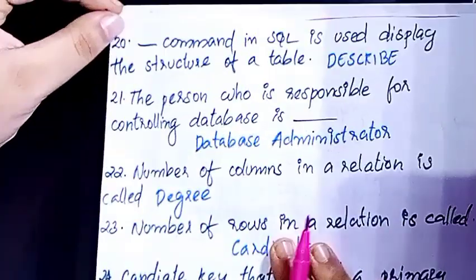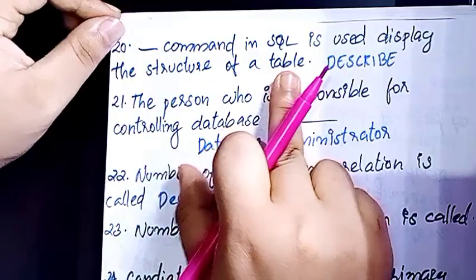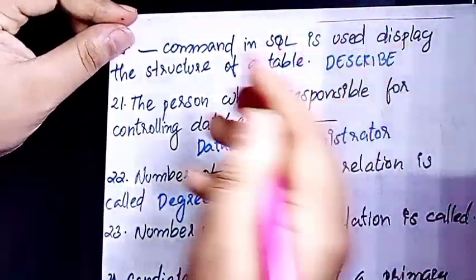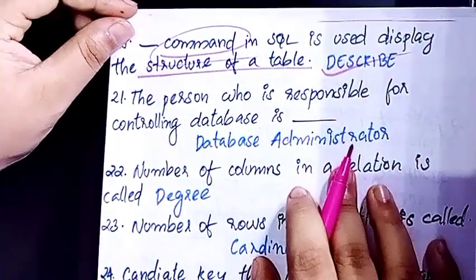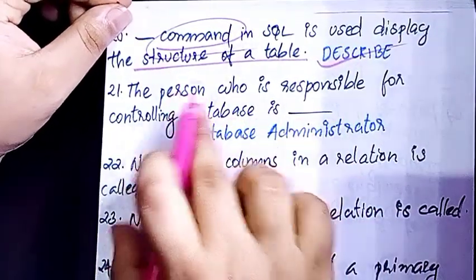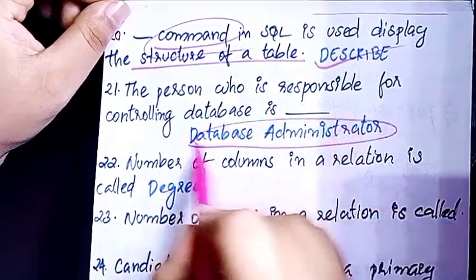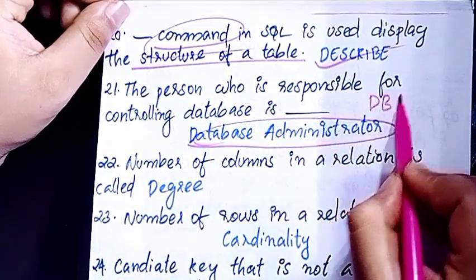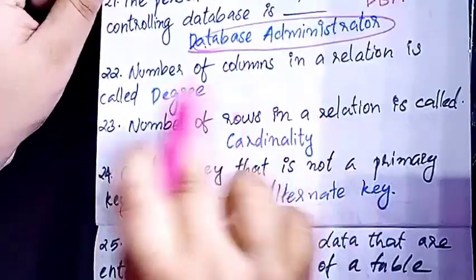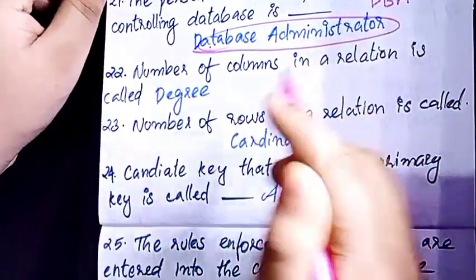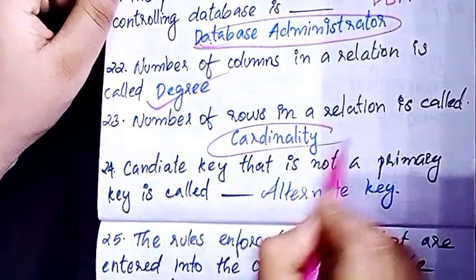The dash command in SQL is used to display the structure of a table. The person who is responsible for controlling the database is the Database Administrator — DBA. The number of columns in a relation is the degree. The number of rows in a relation is cardinality.